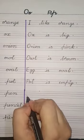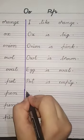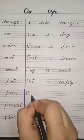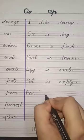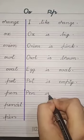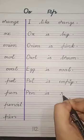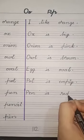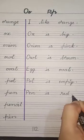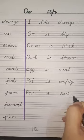Next step: Pen. Pen is red. Pen red color ka hai. P-E-N, pen. Then 'is'. R-E-D, red. Pen is red. Last, full stop.